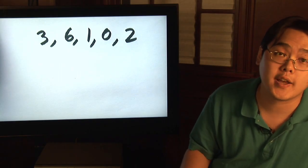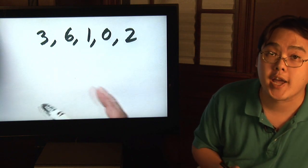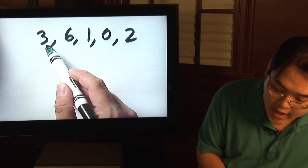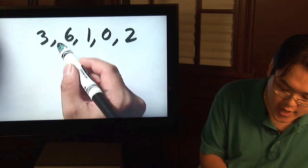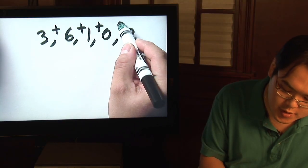What you want to do to find any average is add all the numbers that you have and then divide by how many figures you're beginning with. So adding these five numbers together, we're going to have 3 plus 6 plus 1 plus 0 plus 2.